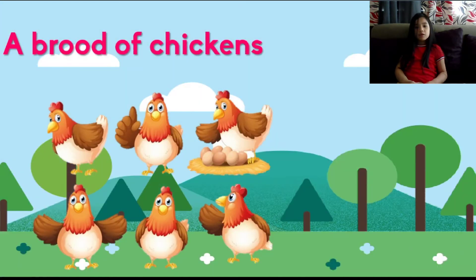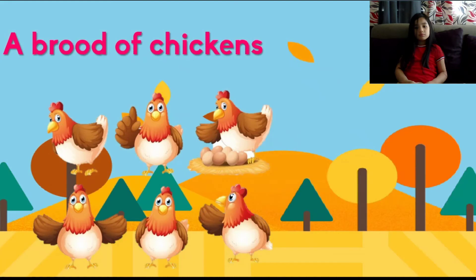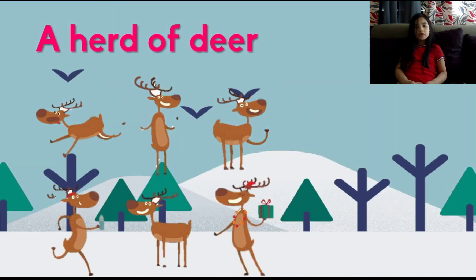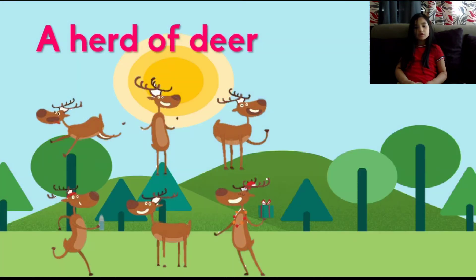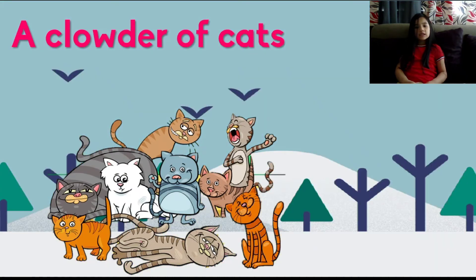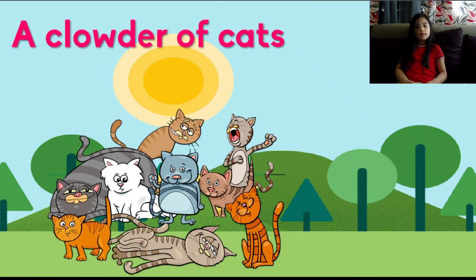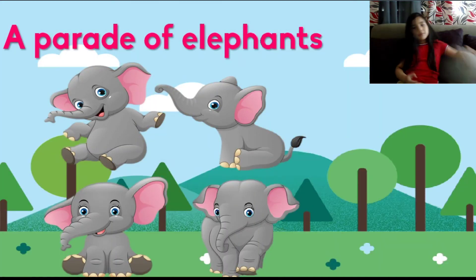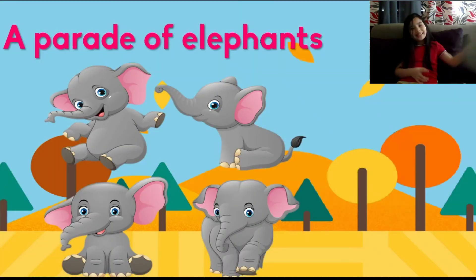A group of chickens is called a brood. A group of deer is called a herd. A group of cats is called a clowder. A group of elephants is called a parade.